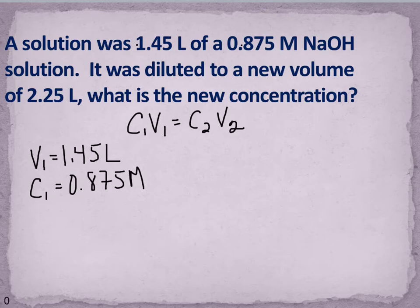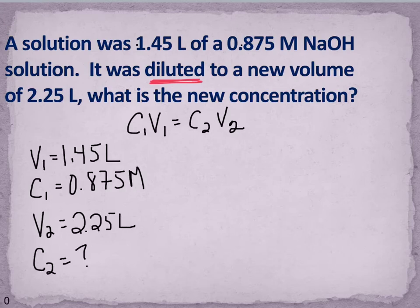It was diluted, so that's a big clue that I'm going to be dealing with a dilution because it's diluted, to a new volume. So V2 equals 2.25 liters. And it says what is the new concentration? So a couple of things clue me in that this is a dilution problem.